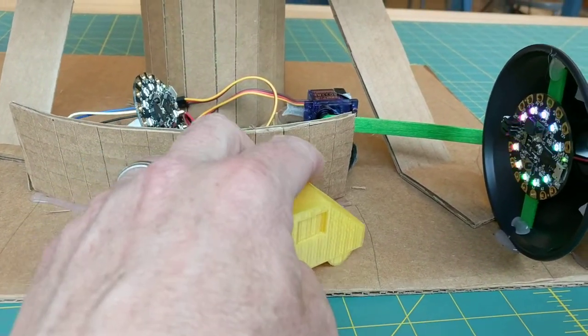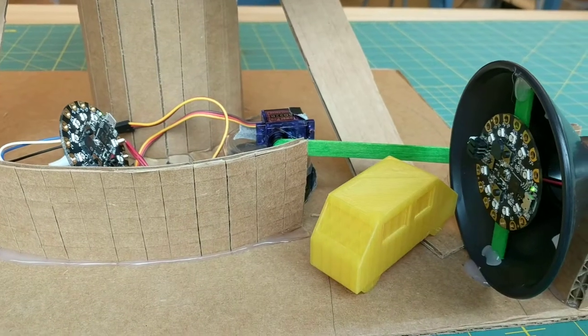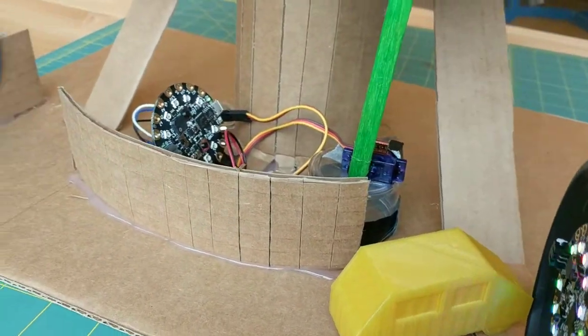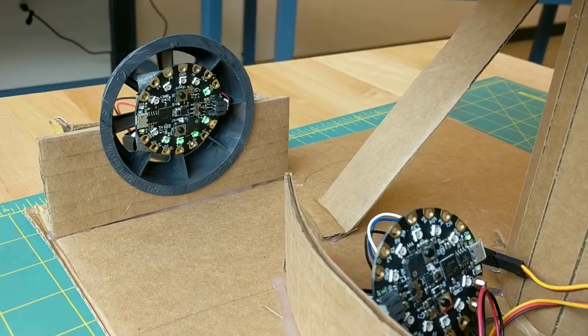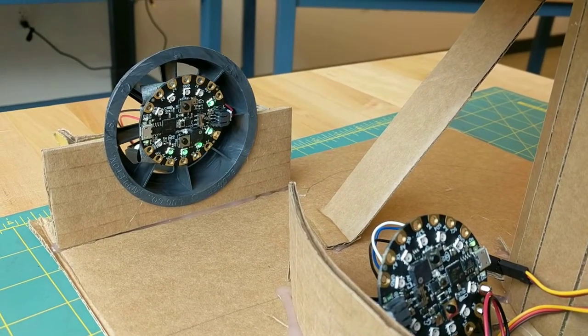So when our 3D printed car comes along it's going to dim the light sensor which will send the infrared signal that will raise and then lower the arm and then our tally has gone from four up to five.